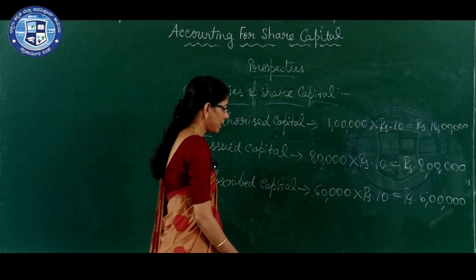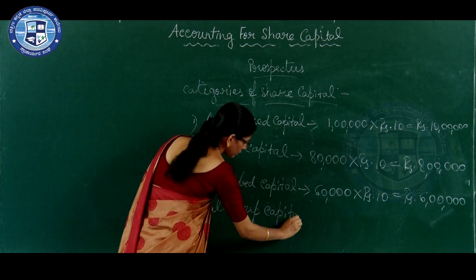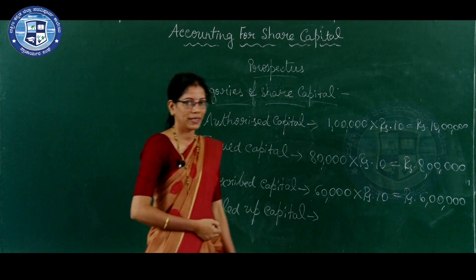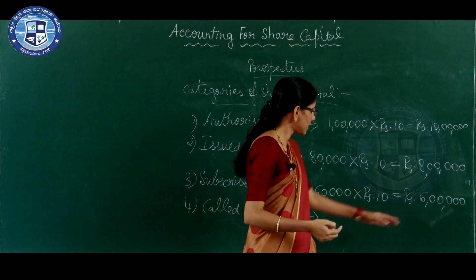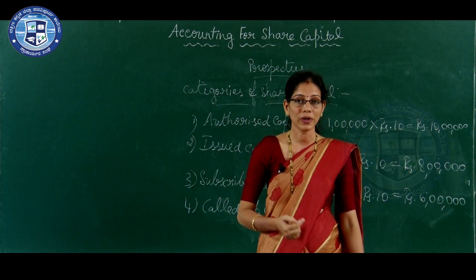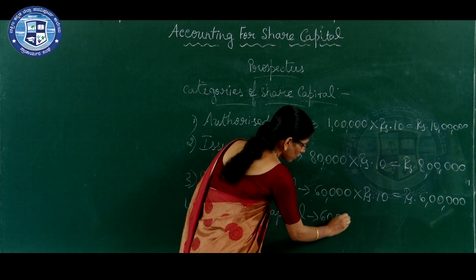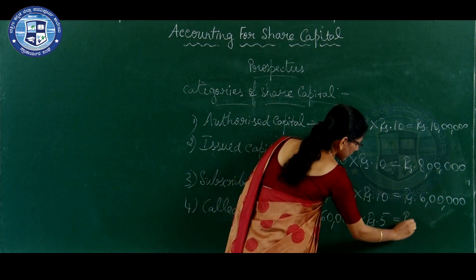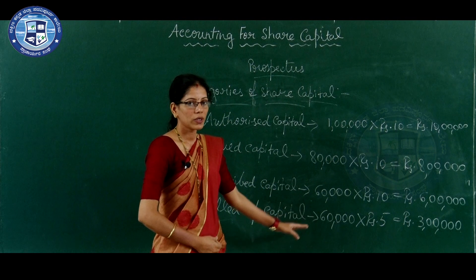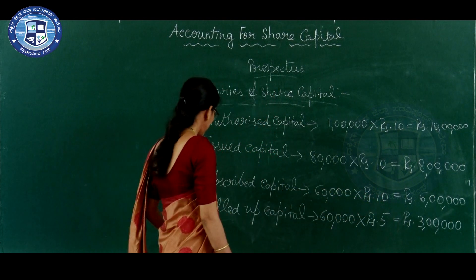Next one is called up capital - it is that part of the subscribed capital which is actually called up by the company. The shareholders have to pay rupees 6 lakh but they can pay in installments. The company called up money up to the allotment stage - that is rupees 5 per share. So the company receives 60,000 shares into rupees 5 equals rupees 3 lakh. That is called as called up capital.